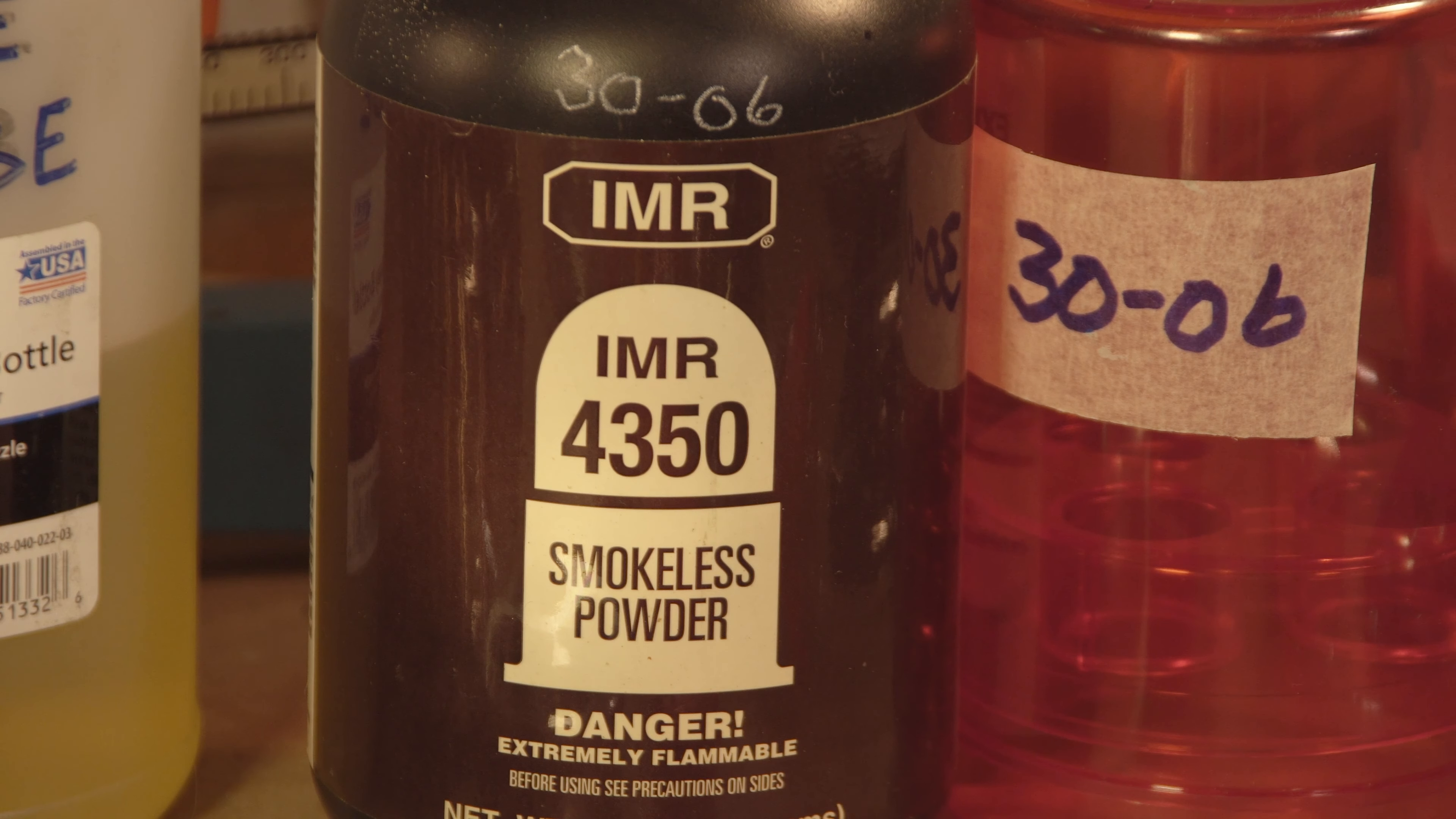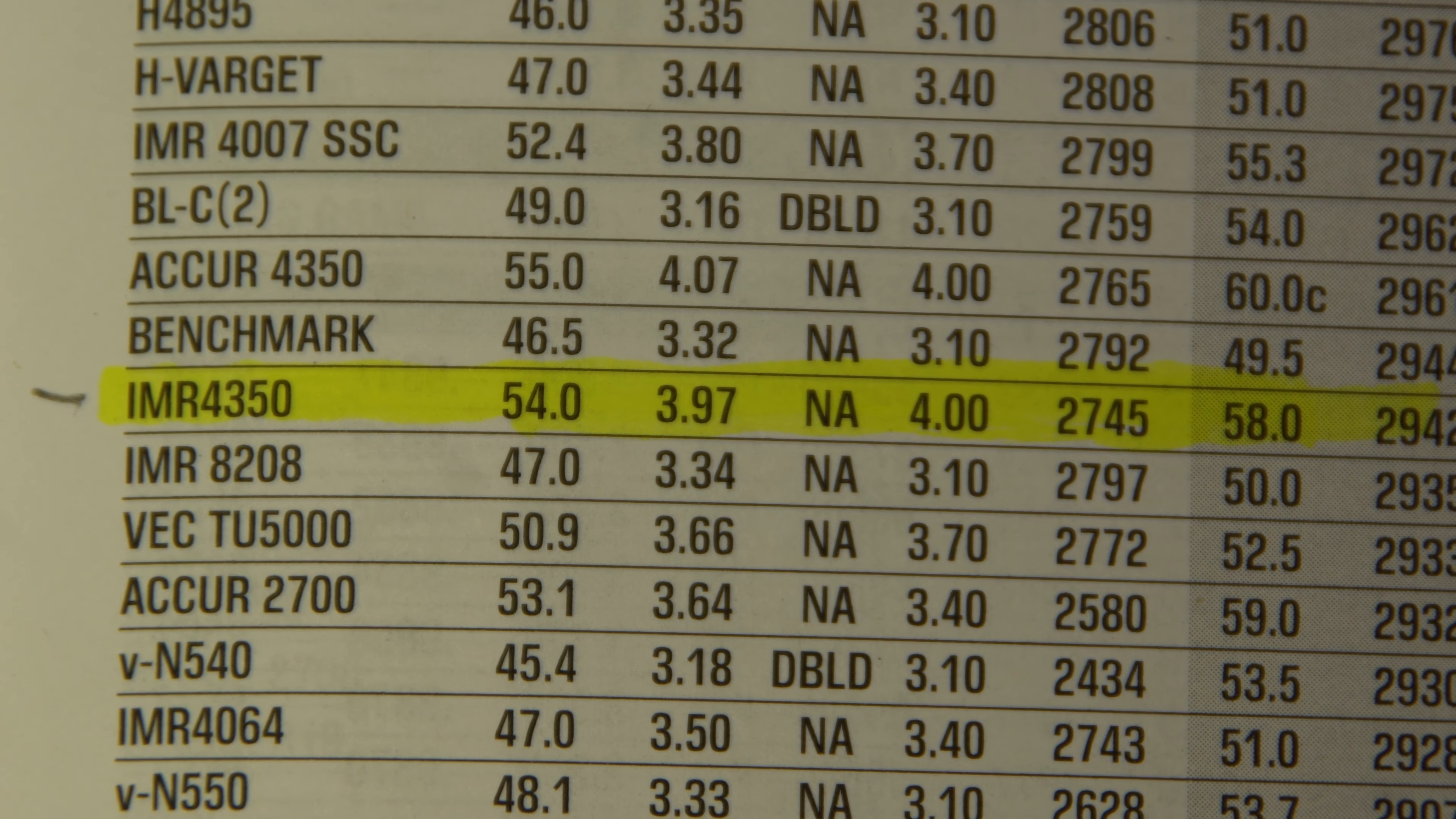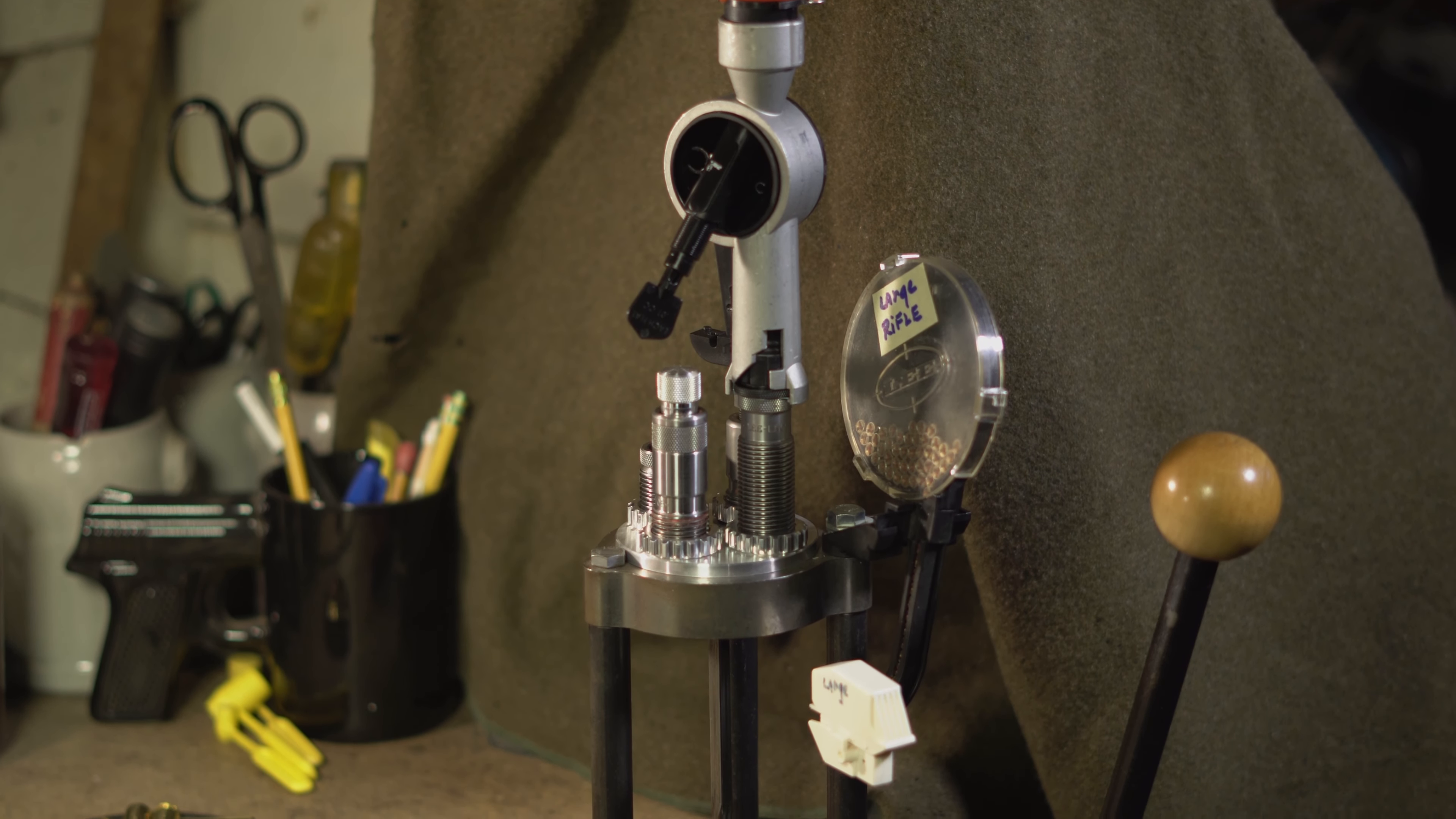We're using IMR 4350 powder. The recommended amount for a 150 grain bullet is 54 to 58 grains. Because we're testing loads, we're going to do 54 and the mid-range 56. So we're setting up the Lee powder drum measure that can drop this large rifle load accurately.